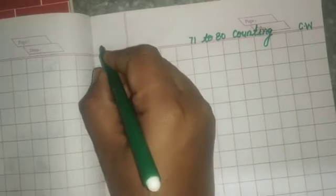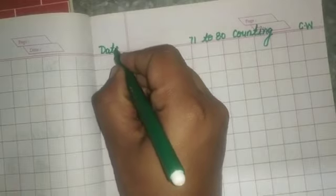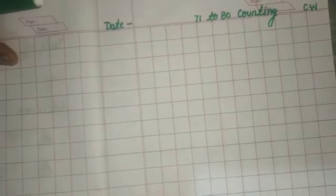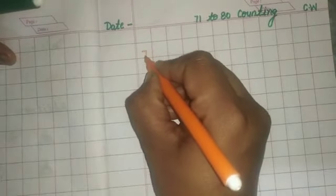This work is for parents. Parents, you have to mention here the topic. Today's our topic is 71 to 80 counting. Okay? Now write here classwork. C.W. means classwork. Write here the date. You have to mention the date here. Okay? Parents, you can write here 71 to 80 counting. Okay? Like I write here.